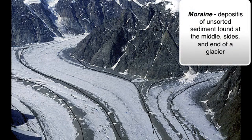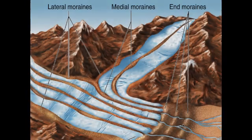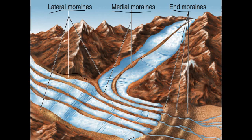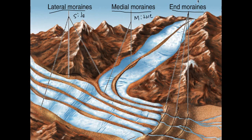There are three types of moraines to know. Lateral moraines are on the side of a glacier. Medial moraines are in the middle of a glacier. End moraines are at the end of a glacier and usually mark the terminus — so when you want to know how far a glacier went, you find the end moraine, which shows you the furthest extent of the glacier. To review: lateral moraines on the side, medial moraines in the middle, and end moraines that mark the terminus.